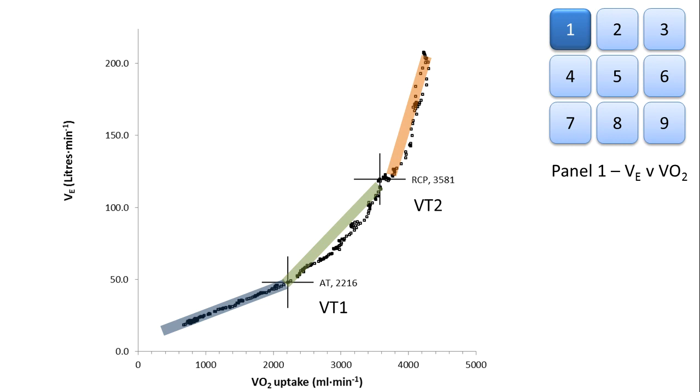You can look at this relationship as three separate metabolic stages of the test and three separate lines, but it's also possible to look at the relationship as though it's an exponential increase in ventilation with respect to the oxygen uptake.